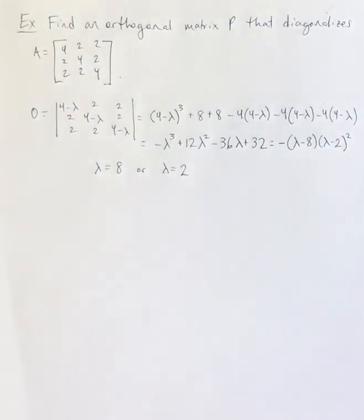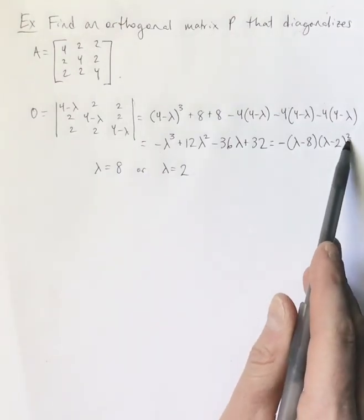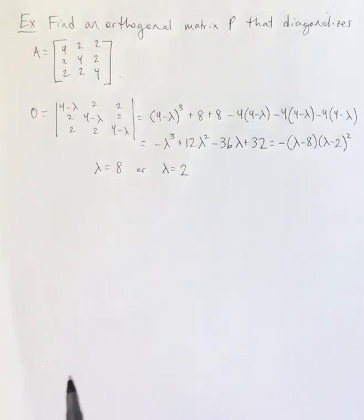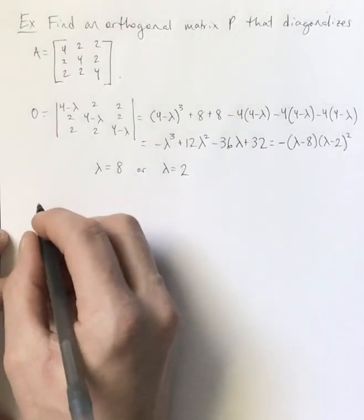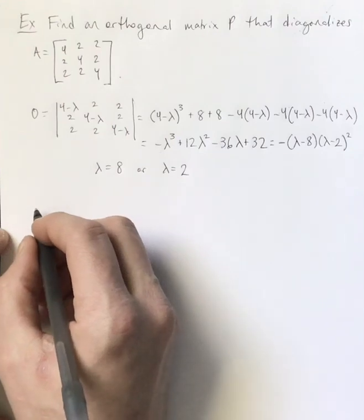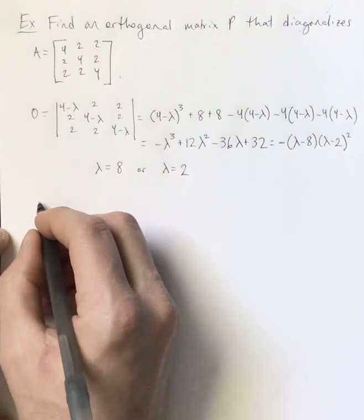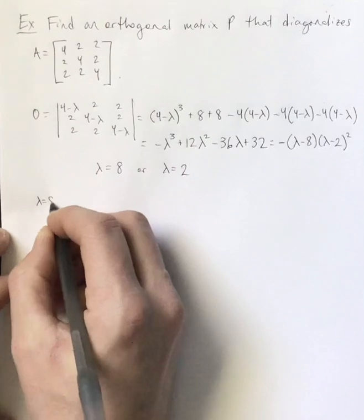Now, lambda equals 8 has an algebraic multiplicity of 1. So that one's going to be easier to work with. Lambda equals 2 has an algebraic multiplicity of 2. And so that one may be more complicated. So let's go ahead and find the eigenspace basis vector for lambda equals 8.